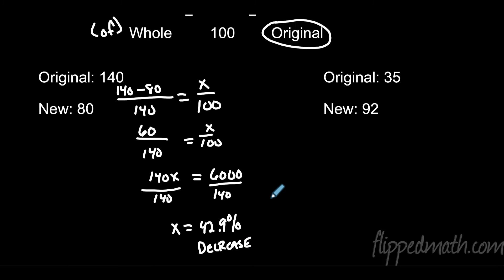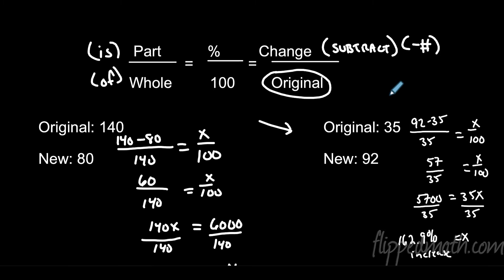I want you to pause the video right now and try this one over here all by yourself. Alright, hopefully you paused the video and you tried this one. So I found the change here. Remember I subtract, I did 92 minus 35 because I don't want to worry about negative numbers. So I did the bigger one first. I got 57 over 35. Remember the original number, it goes on the bottom. I cross multiplied, I got 5700 equals 35x. I divided by 35 and I got a hundred and sixty two point nine percent. And it was an increase because from our original to our new we increased.